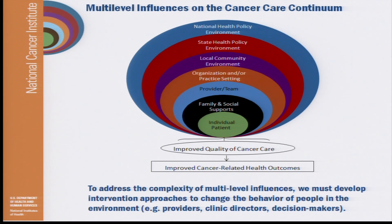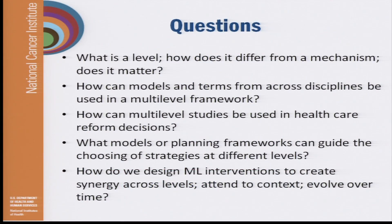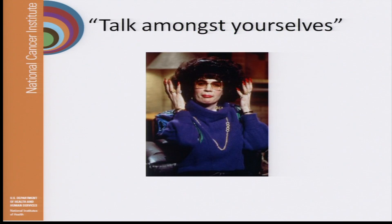As a behavioral scientist exploring these models, I may disagree a little with the idea of forgetting everything you learned before. When you look at these levels — policy, organizational, community — fundamentally there are people at these levels who need to make specific changes to change their environments. Even policy makers and directors of clinics have to make specific decisions and changes in their own behaviors to effect environmental change. To address the complexity of multi-level influences, we have to develop intervention approaches that ultimately change the behavior of people in the environment. Some of these discussion questions you've already heard — now it's time to talk amongst yourselves. Thank you.